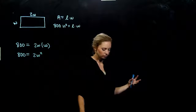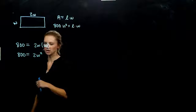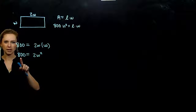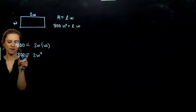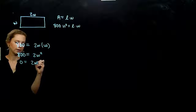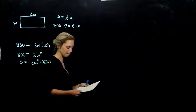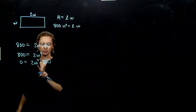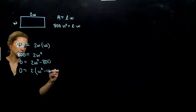When we go to solve quadratic equations, everything needs to be on one side, set equal to zero, and the first term needs to be positive. So I'm going to move 800 to this side. If I subtract 800 from both sides, I get zero equals 2W squared minus 800. Now we can start to factor — there's a common factor of 2, leaving W squared minus 400.